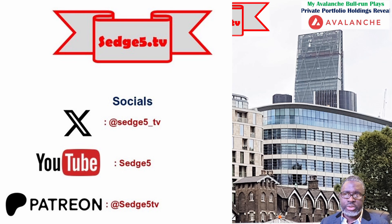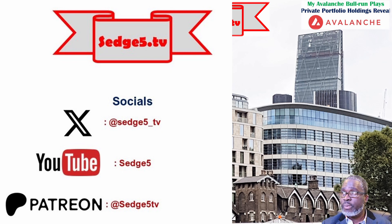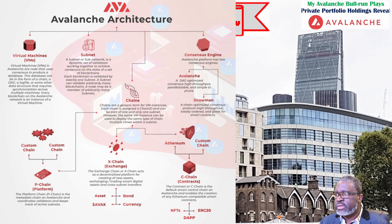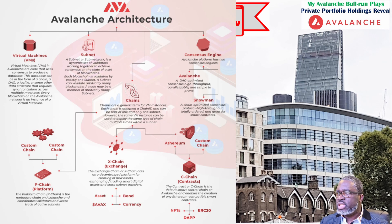Let's forget about Ethereum killers and focus on alternative layer ones that are functional and efficient. Avalanche is one of my favorites. The Avalanche blockchain is designed differently — there are three blockchains inherent to the network: the Platform Chain (P-Chain), the Exchange Chain (X-Chain), and the Contracts Chain (C-Chain). The P-Chain is the main metadata chain coordinating validators, the X-Chain is a decentralized platform for creating, exchanging, and trading digital assets including cross-chain subnet transfers, and the C-Chain is the default smart contract chain enabling creation of any Ethereum-compatible smart contracts.